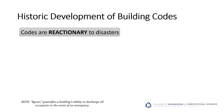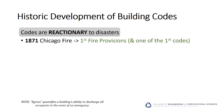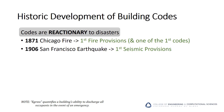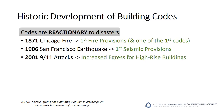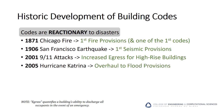Why do I bring up these horrible tragedies? To make this important point: building codes are often developed retroactively and are a reaction to disasters like these. Codes capture the best practices learned by previous generations to avoid loss of human life. The 1871 Chicago Fire led to the first fire provisions in code. The 1906 San Francisco earthquake led to the first seismic provisions. The 2001 9-11 attacks led to increased egress requirements for high-rise buildings, and Hurricane Katrina in 2005 led to an overhaul of flood provisions in the code.